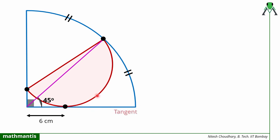The second piece of information: this line is tangent to the red semicircle. So if I draw a perpendicular from the point of contact, it will definitely pass through the center of the semicircle — that is the condition of tangency of a circle. So this length is the radius of this circle, this is also a radius, and this must also be the radius of this circle, because the distance from the center of a circle to the tangent's point of contact equals the radius, and it is perpendicular.